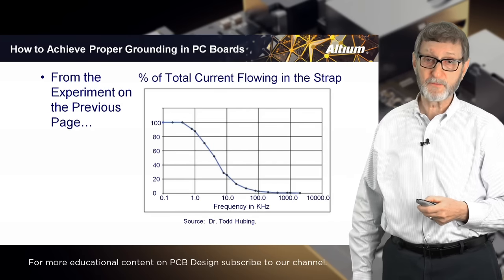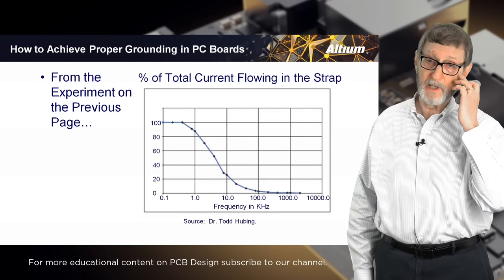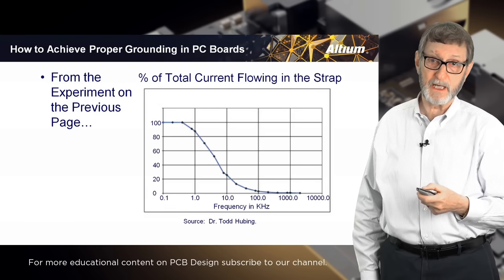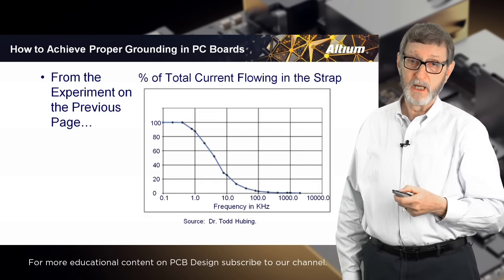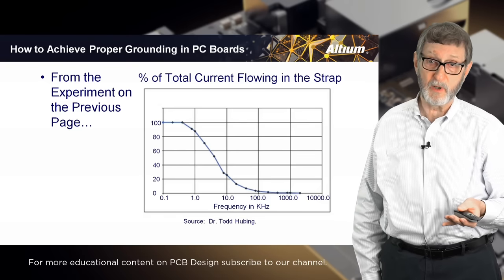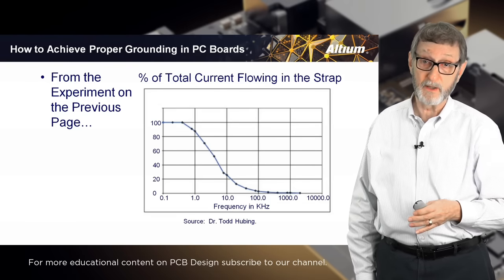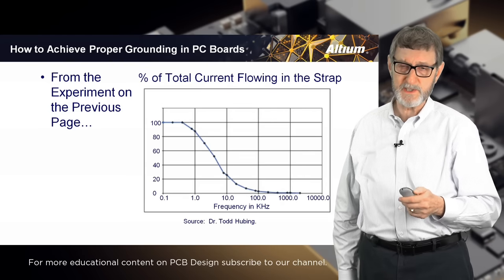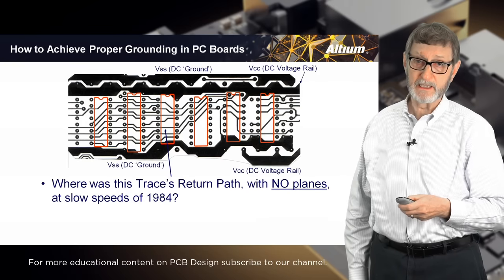Dr. Todd Hubing of Clemson University created a graph plotting current flow in that short wire versus frequency. Beyond 100 kHz, there is virtually no current in that wire. Beyond 1 MHz, there is zero current in it. Rise times in modern ICs are 300–700 picoseconds, pushing digital energy into the gigahertz range. Even low-end microcontrollers operate in the 100–300 MHz region — so yes, all digital designs are well above one megahertz.